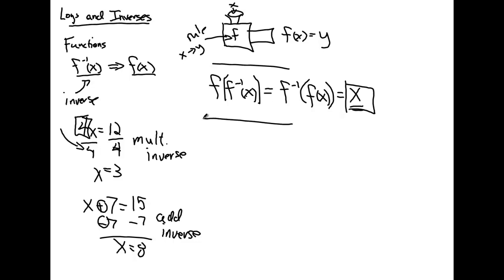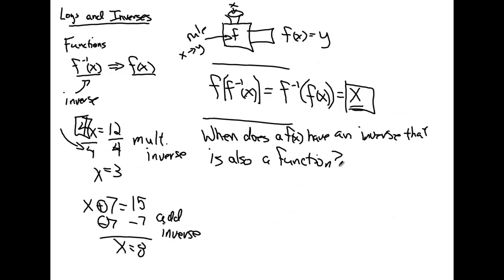Hopefully you guys remember this from algebra two and from trig, but when does a function have an inverse that is also a function? We're going to answer that. When does this happen? Well, hopefully this is review, so hopefully you remember that this happens when f of x is one to one. What is one to one?